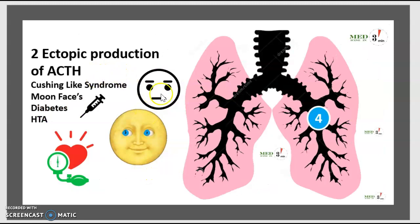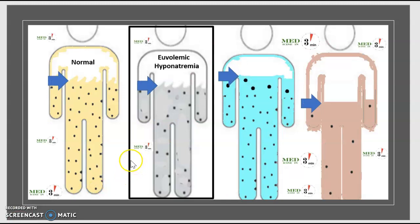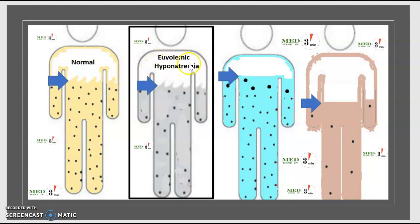The second type of small cell carcinoma involves ectopic production of ACTH, producing a Cushing-like syndrome with moon face, diabetes, and hypertension. Regarding the SIADH type, the hyponatremia is euvolemic — not hypervolemic or hypovolemic.